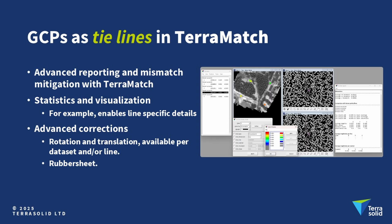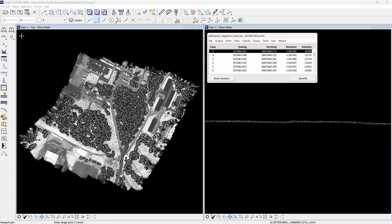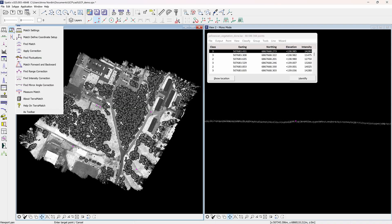The last method in this tutorial is how ground control points can be used as tie lines with TerraMatch. Tie lines match points that show the same location on different lines or moments in time and are useful for solving corrections, visualizing, and reporting mismatches. It's similar to output control report but is a more advanced method that requires the trajectory of the dataset, allowing more control and options for different types of reports and works at larger scale.